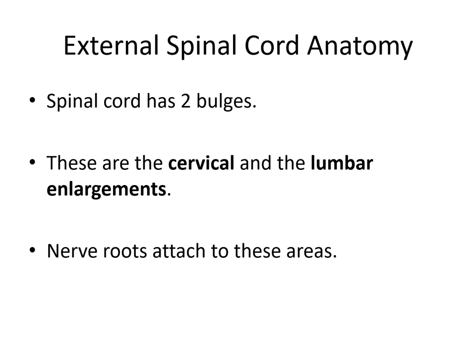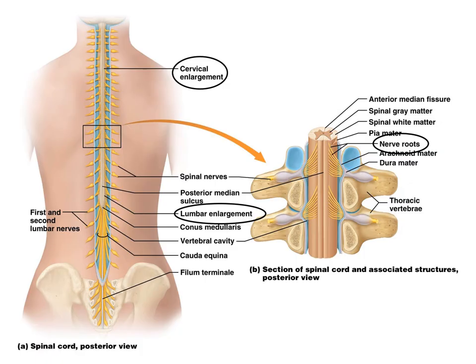The spinal cord has two bulges: the cervical and lumbar enlargements. They're thicker because nerve roots attach to these areas. From the posterior view, you can see the cervical enlargement and the lumbar enlargement, which are wider because of these nerve roots extending from them.